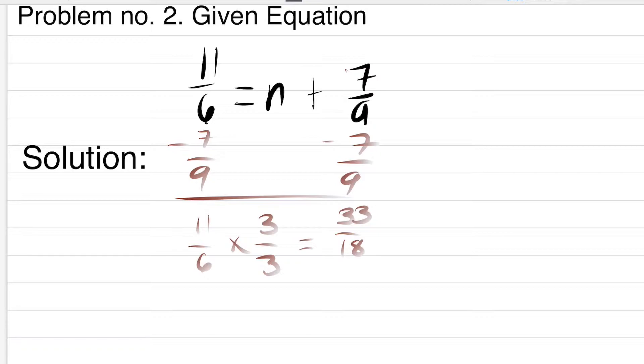And 7 over 9, I multiply by 2, and it will become 14 over 18.